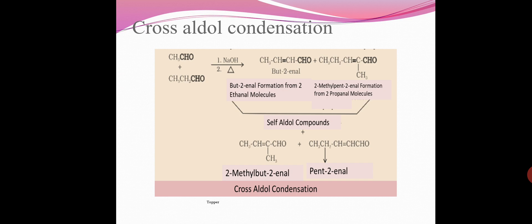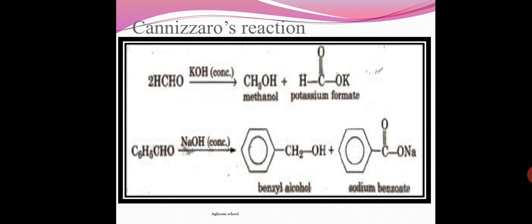Now next one is Cannizzaro reaction. This reaction is given only by aldehydes having no alpha hydrogen atom. Aldehydes undergo self-oxidation reduction reaction on heating with concentrated alkali. This is an example of disproportionation reaction. Formaldehyde gives methanol and potassium formate, and benzaldehyde reacts similarly.